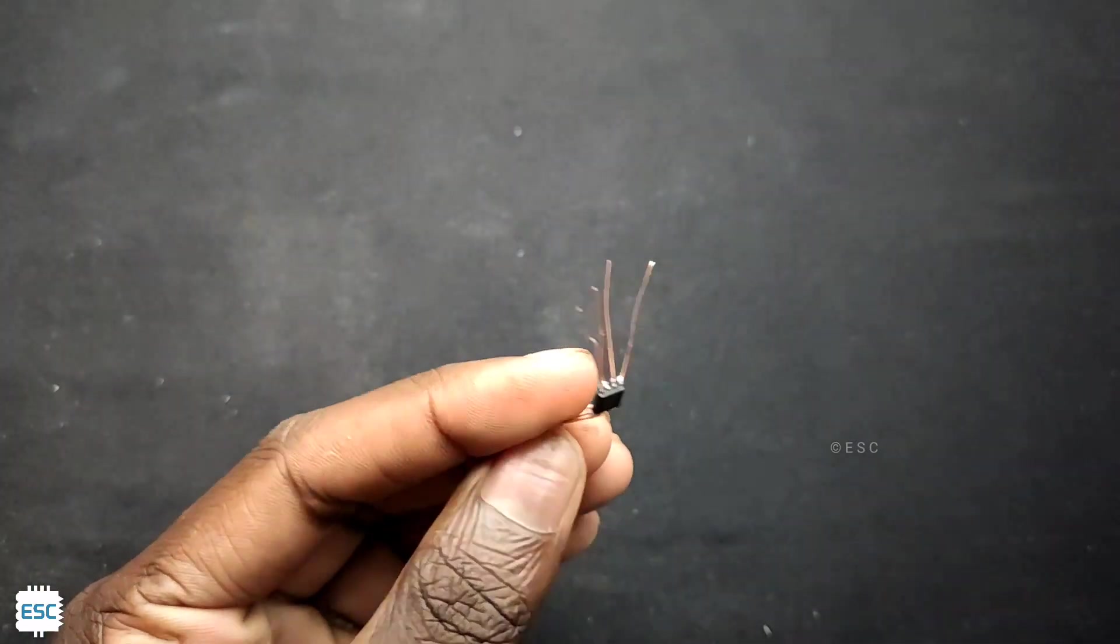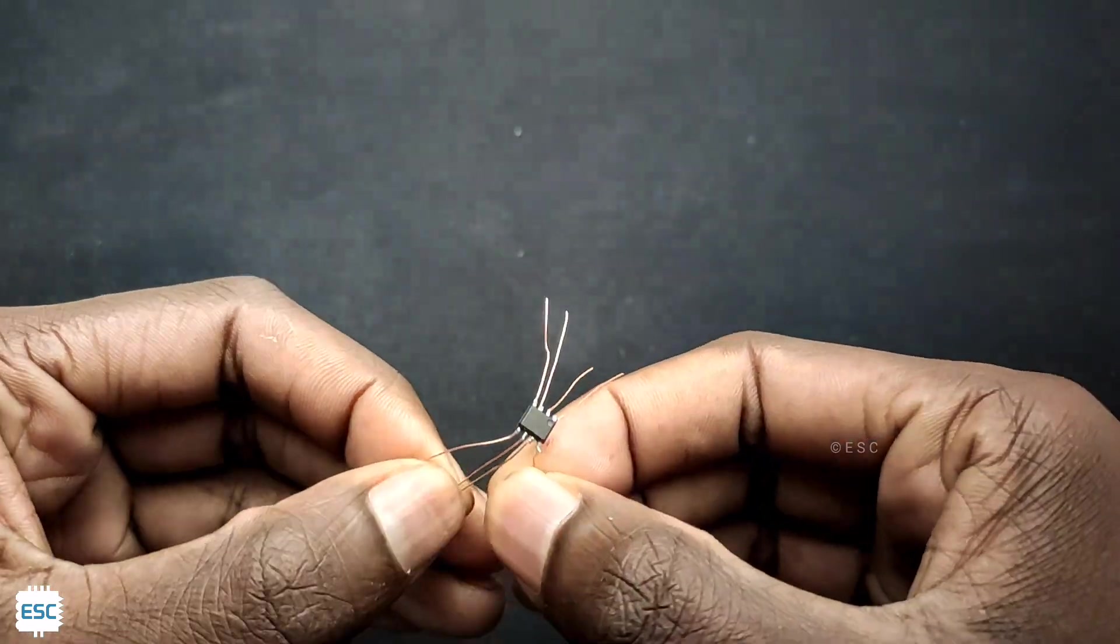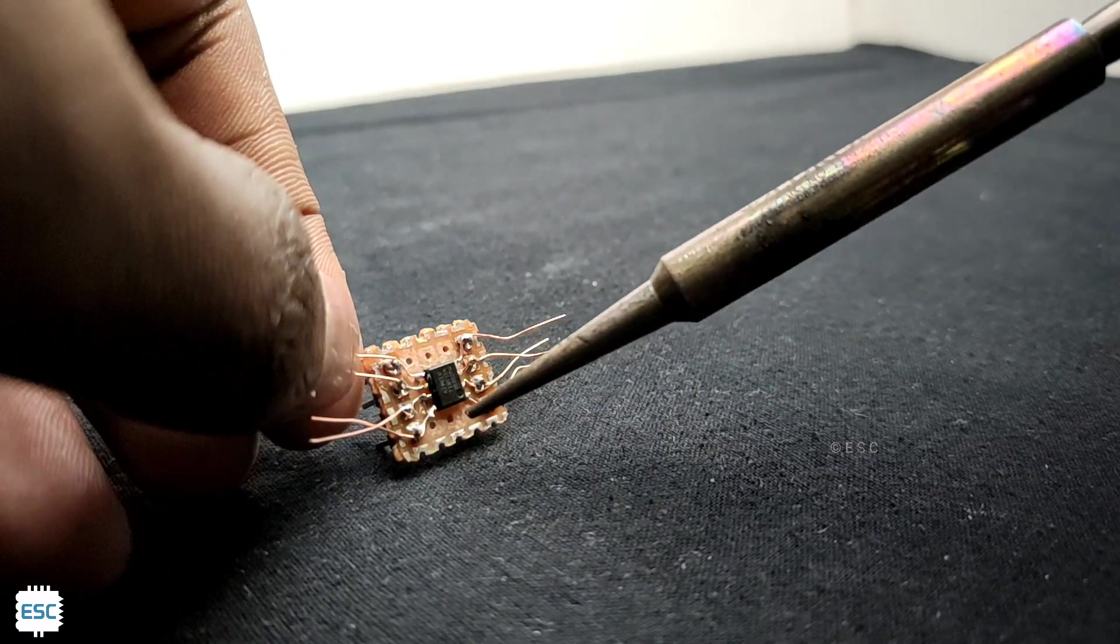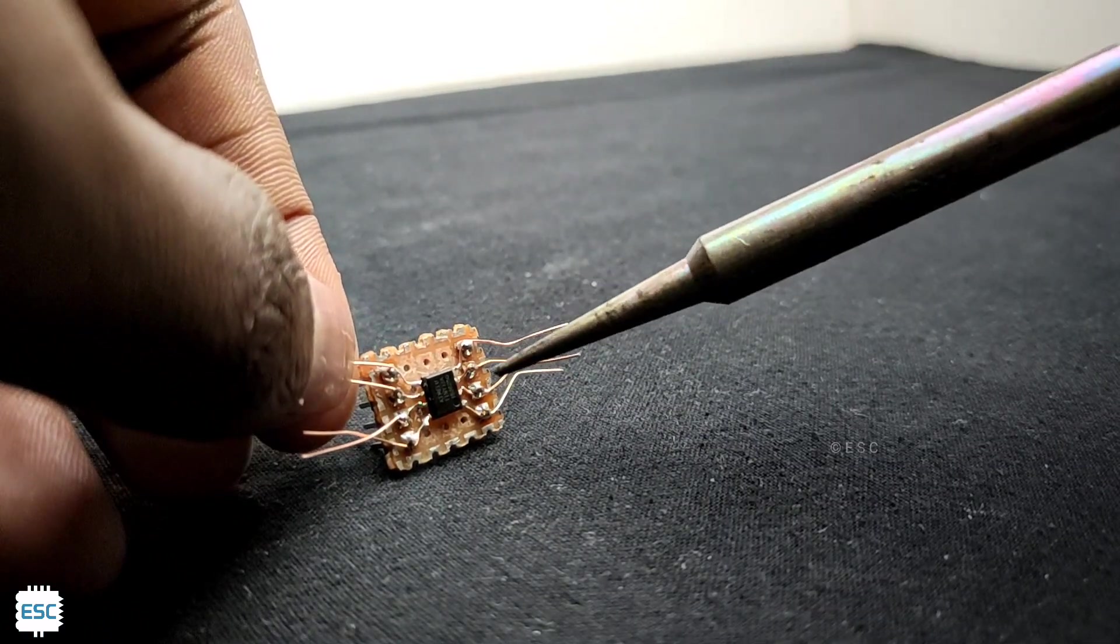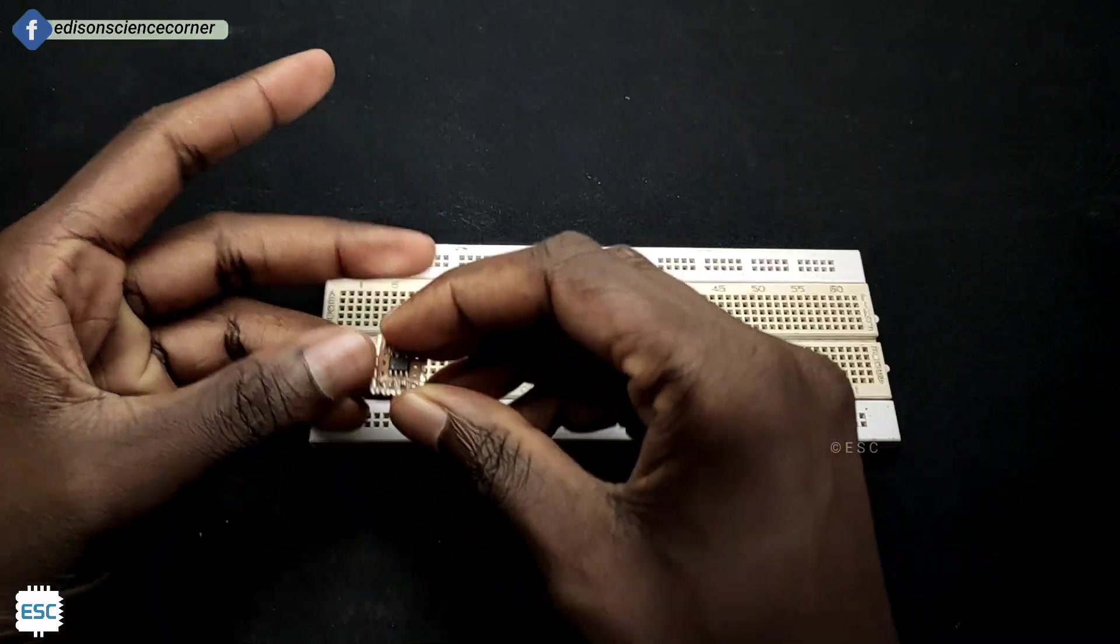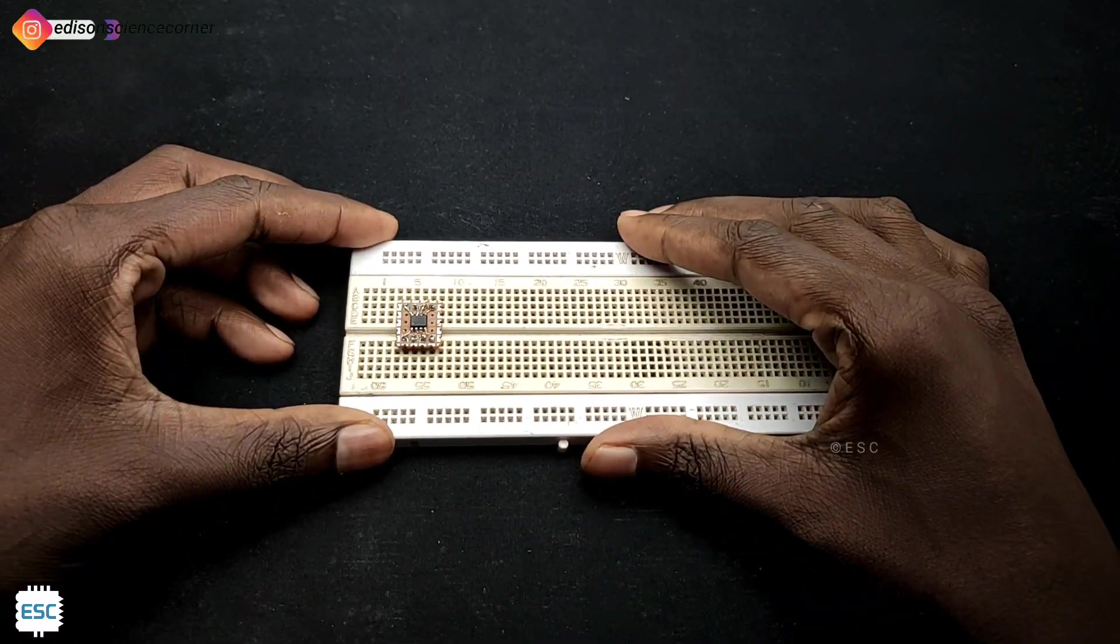Then I connected single standard copper wires to ATtiny13 and placed it in the middle of the dot board. I connected each wire to corresponding header pins. I placed that in a breadboard. Next we need an Arduino Uno.